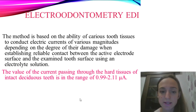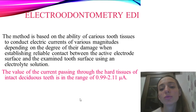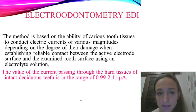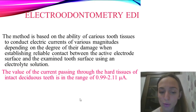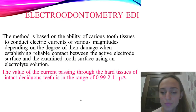Electroodontometry: the method is based on the ability of carious teeth to conduct electric current of various magnitudes depending on the degree of their damage. When establishing a reliable contact between the active electrode surface and the examined tooth surface using an electrolyte solution, the value of the current passing through the hard tissue of an intact deciduous tooth is in the range of 0.99 to 211 microamperes.